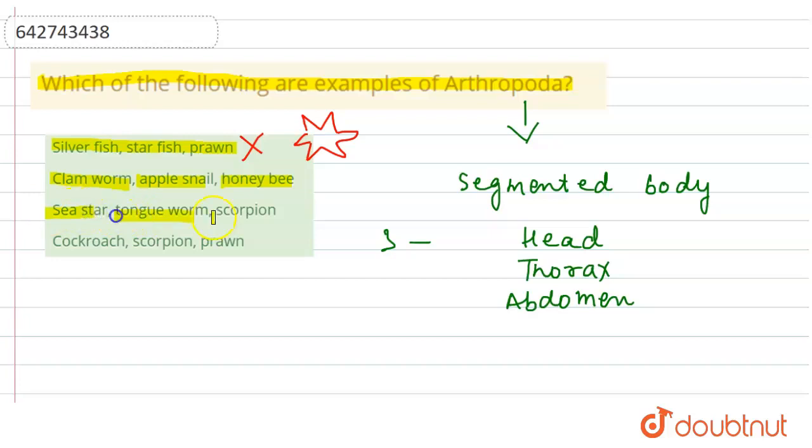If we talk about cockroach, scorpion, and prawn - yes, they belong to the arthropods because if we see the structure, we could find a head and a thorax in them.